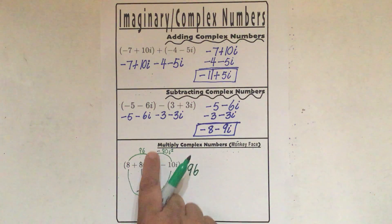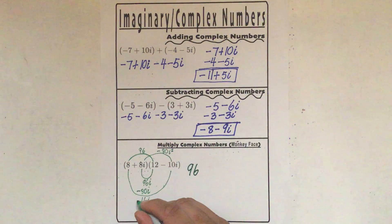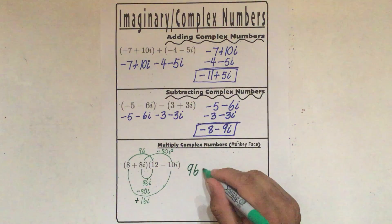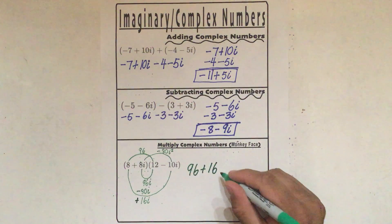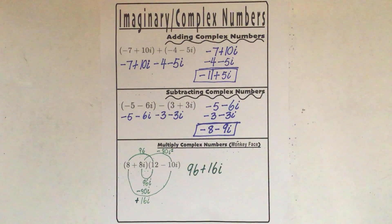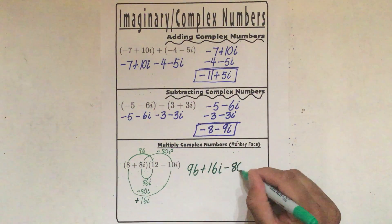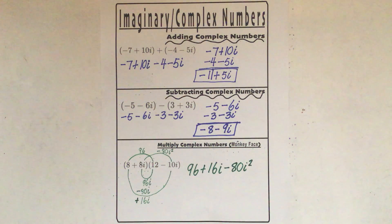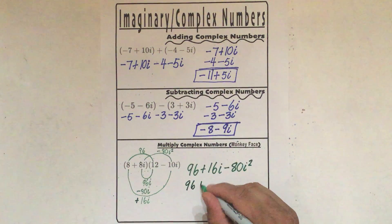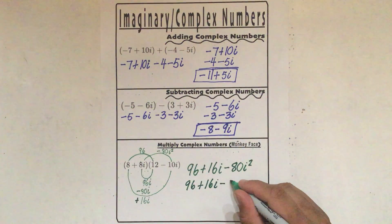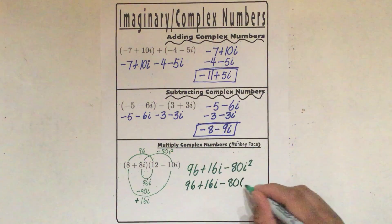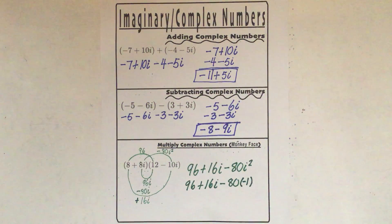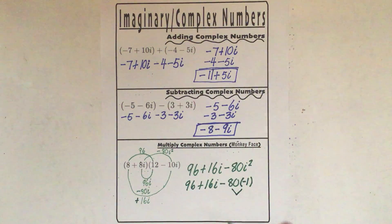Then this in the middle — if you notice, the 16i is in the middle of these two. This is a positive 16 because 96 is bigger, so I'm going to say plus 16i. And then on the right side is minus 80i squared. Now remember that i squared is equal to negative 1. So I'm going to bring down 96 plus 16i minus 80, but instead of putting i squared, I'm going to put parentheses negative 1, because i squared is equal to negative 1.